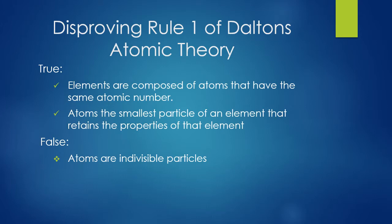Let's look at postulate one and why it has been disproved. What's still true is that elements are composed of atoms that have the same atomic number, and that atoms are the smallest particle of an element that retain the properties of that element. The false part is that atoms are indivisible particles — that is not true. We can actually split atoms now with technology that we've developed.